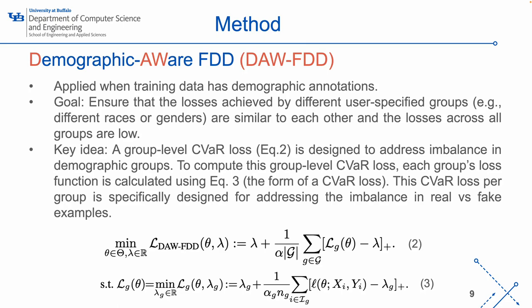DAW-FDD can be applied when training data has demographic annotations. The goal is to ensure that the losses achieved by different user-specified groups, for example different races or genders, are similar to each other, and the losses across all groups are low. The key idea behind this method is to address the imbalance in demographic groups through a group-level CVaR loss with equation 2. To compute this group-level CVaR loss, we compute each group's loss function using equation 3, which is a form of CVaR loss specifically designed for addressing the imbalance in real versus fake examples.